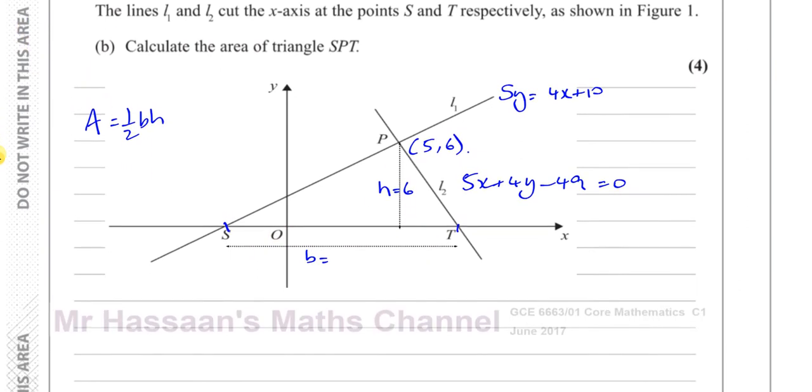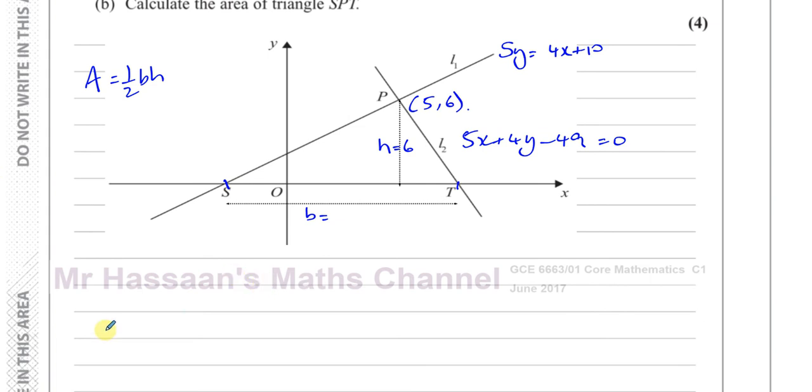So if I can find the coordinates of S and T, I can find the base of the triangle. And I can use the area equals a half times base times height. So I need to find what B is. I know what H is. In order to find B, I need to find the coordinates of the points where the lines cut the x-axis.